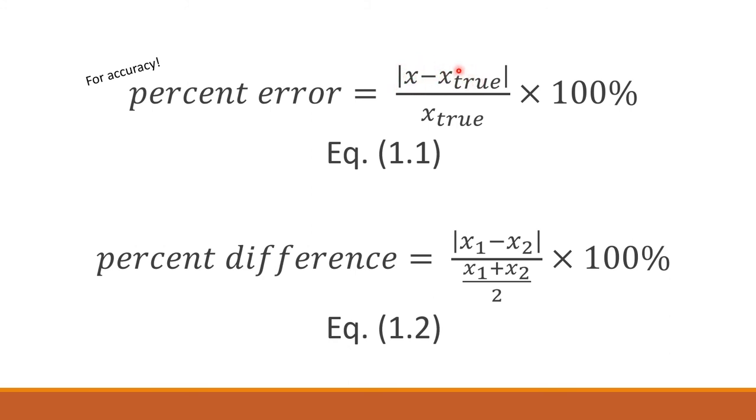And x_true is the true value. So measured value minus the true value - you get the absolute value so it should be positive - divided by the true value. You will get a decimal; times 100 and you get the percentage of how much your measured value deviated from the true value. That's the percent error. How about percent difference? If this is for accuracy, this is usually for precision.